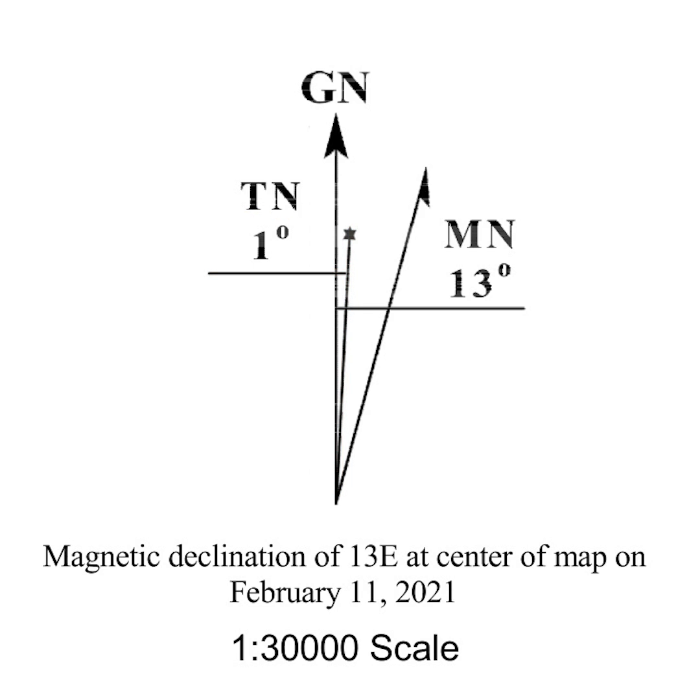Finally, you see the letters MN, which stand for magnetic north. MyTopo maps show the difference between magnetic north and grid north. In this case, magnetic north is 13 degrees east of grid north.